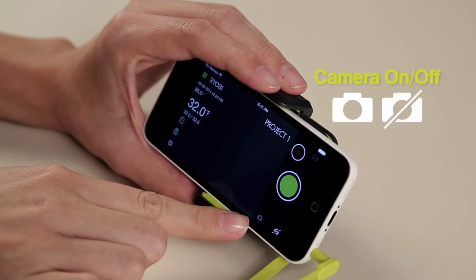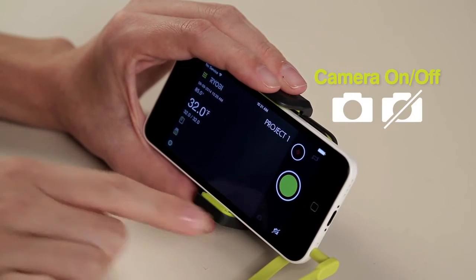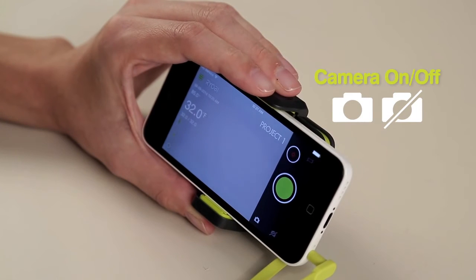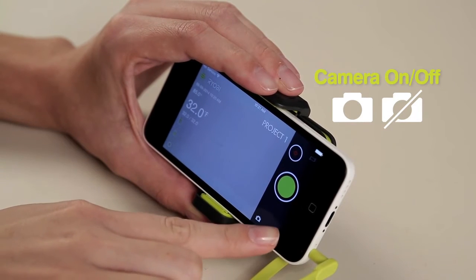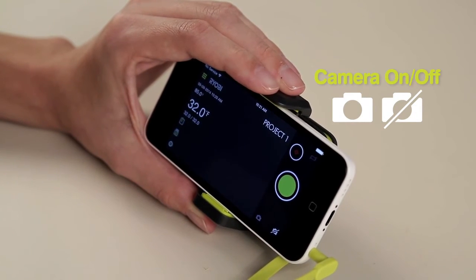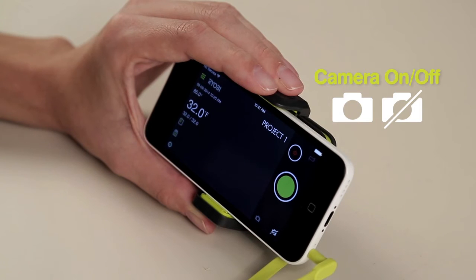To turn the camera on, touch the camera icon. This allows you to see through the camera on your smartphone in the app. To turn it off, touch the grey camera icon with a slash and the camera feature will turn off.